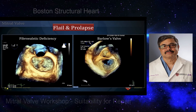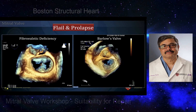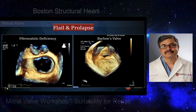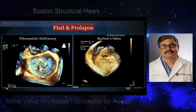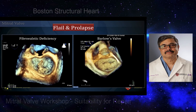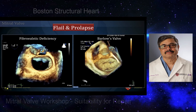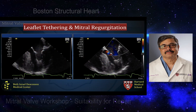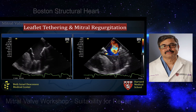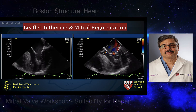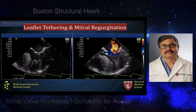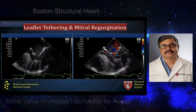Surgically, it is important to differentiate between flail and prolapse, and the underlying pathophysiology — fibroelastic deficiency involving isolated P2 or P1 flail, versus Barlow's valve, which involves multiple scallops, bileaflet involvement, dilated annulus, and lengthened leaflets. Finally, Type 3 mechanism — leaflet tethering and mitral regurgitation — is an important component of the assessment for suitability of repair when the patient has functional ischemic mitral regurgitation.